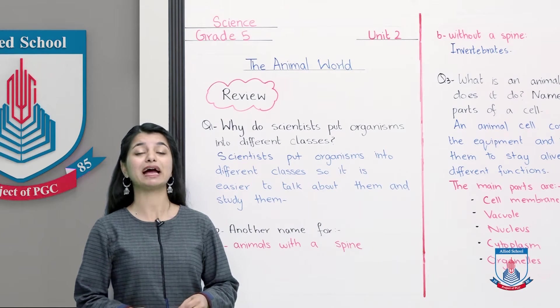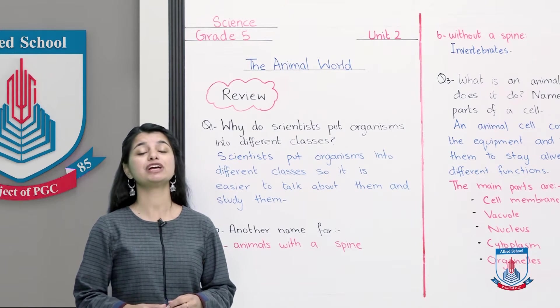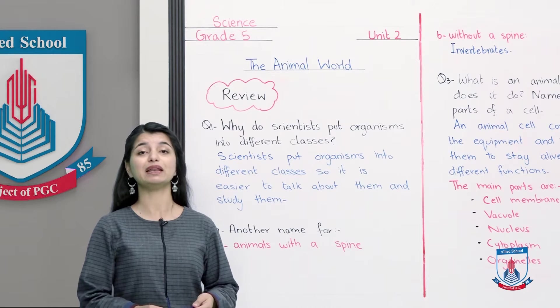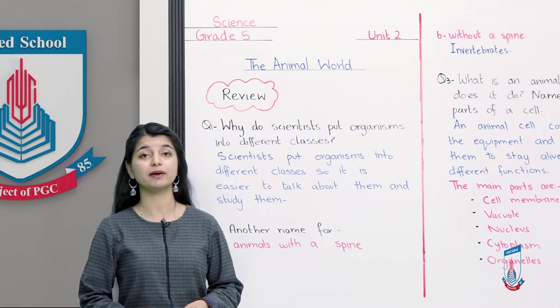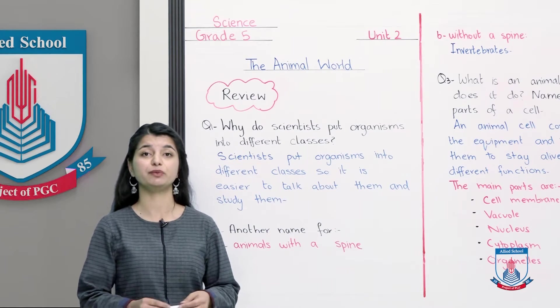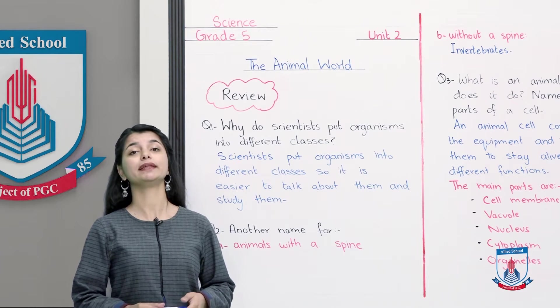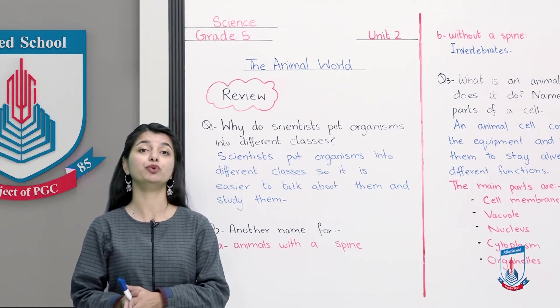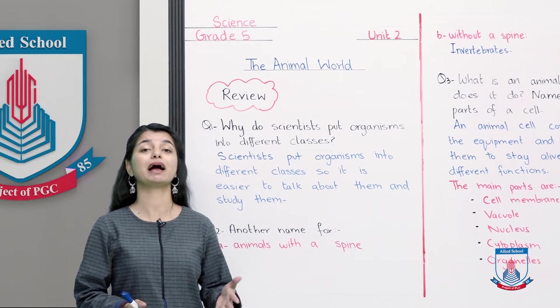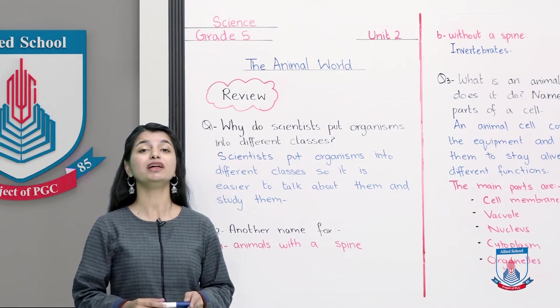The animal world was a chapter about animal classification. In this chapter, we talked about how we classify animals on a basis which we have vertebrates and invertebrates in the main groups, right? The vertebrates have a backbone while the invertebrates do not exist.